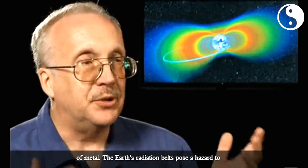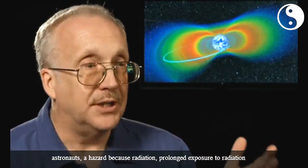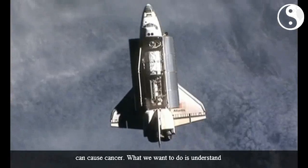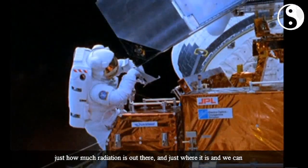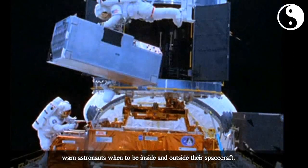The Earth's radiation belts pose a hazard to astronauts, a hazard because radiation, prolonged exposure to radiation, can cause cancer. What we want to do is understand just how much radiation is out there and just where it is, and we can warn astronauts when to be inside and outside their spacecraft.